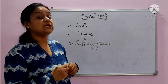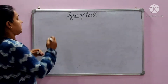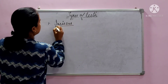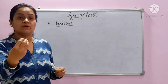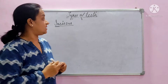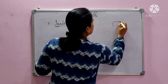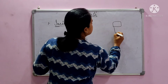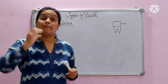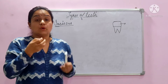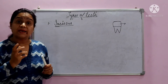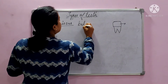Let us understand the types of teeth. In humans, the first type of teeth are the incisors. The upper portion of the incisors is flat — these are the biting teeth. They help to bite food. For example, when you eat an apple or guava, you bite them in front using your incisors. So incisors are the biting teeth.